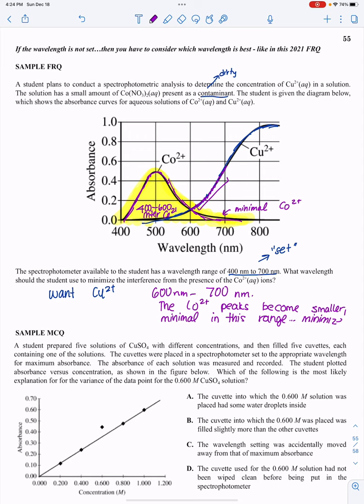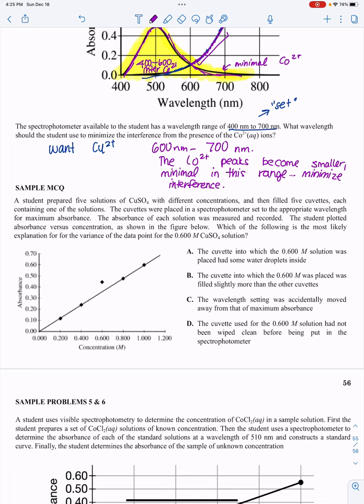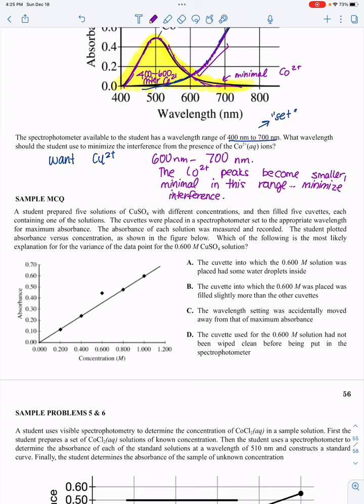The last question will be the sample multiple choice. A student prepared five solutions of copper sulfate with different concentrations and filled five cuvettes, that sample thing I told you about. Each containing one of the solutions, the cuvettes were placed in a spectrophotometer set to the appropriate wavelength for maximum absorbance. The absorbance of each solution was measured and recorded. The student plotted absorbance versus concentration, as shown in the figure.